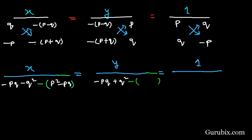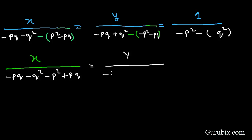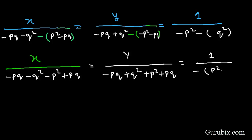Now we shall multiply p with minus p plus q, which becomes minus p squared minus pq. And here we shall multiply minus p with p, which gives minus p squared. Then with minus and bracket it becomes plus q squared. So we have: minus pq minus q squared minus p squared plus pq under x; and minus pq plus q squared plus p squared plus pq under y. Solving the values under y gives minus p squared plus q squared, as the pq terms cancel.